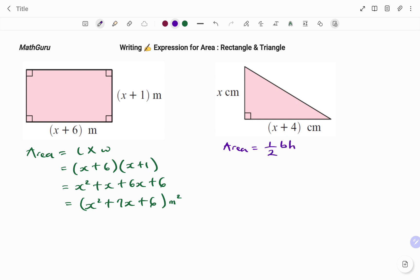I have that is half times my base. In this case, the base is x plus 4, I'm going to put that in the bracket, times my perpendicular height x. And if I expand what I have is...